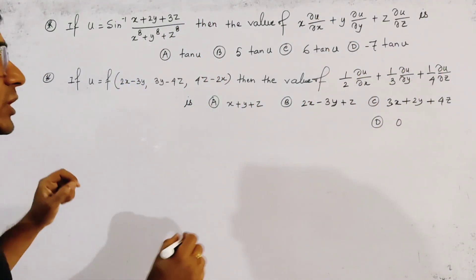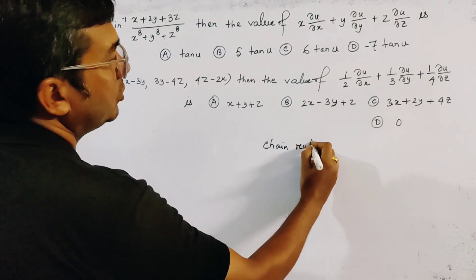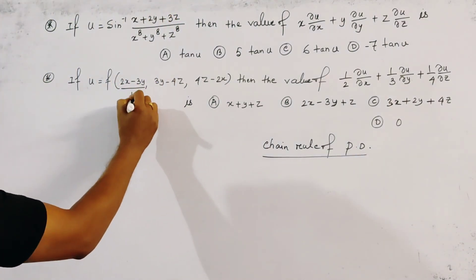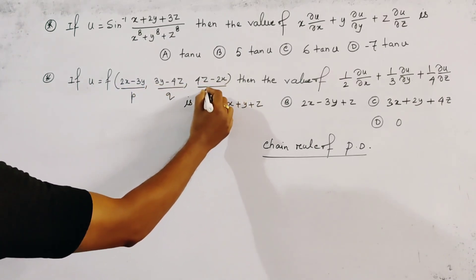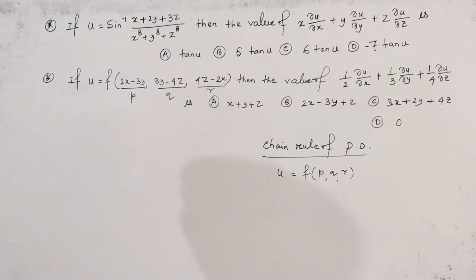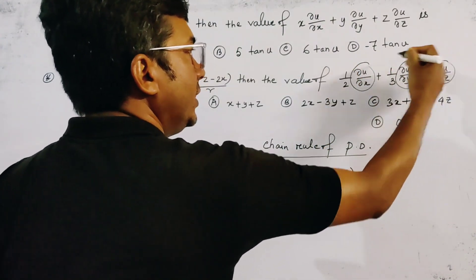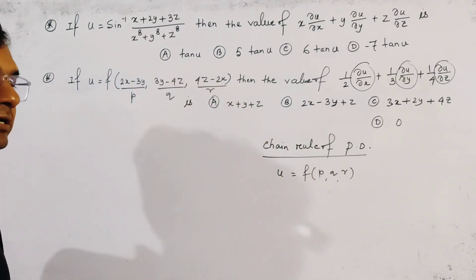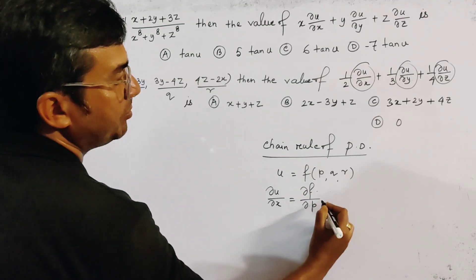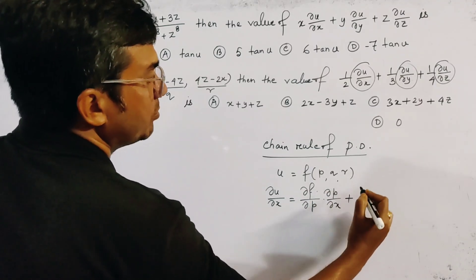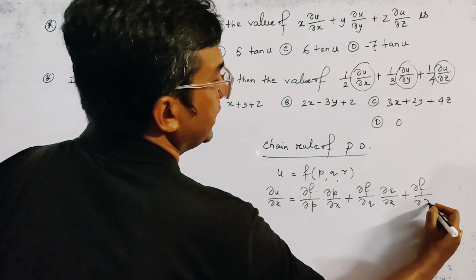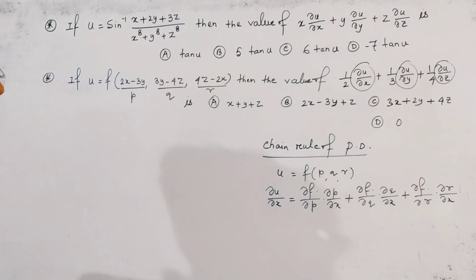Here we use the chain rule of partial derivative. We first take p = (2x minus 3y), q = (3y minus 4z), and r = (4z minus 2x). Then clearly u is f of (p, q, r). We find ∂u/∂x, ∂u/∂y, and ∂u/∂z one by one. By chain rule: ∂u/∂x = (∂f/∂p)(∂p/∂x) + (∂f/∂q)(∂q/∂x) + (∂f/∂r)(∂r/∂x), because p, q, r are functions of x, y, z.